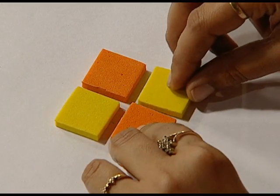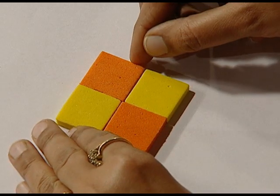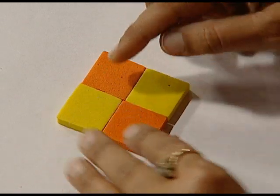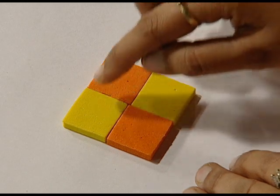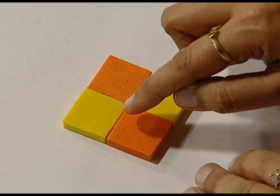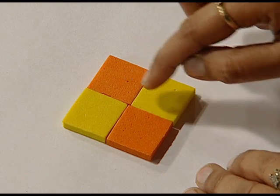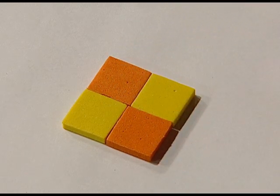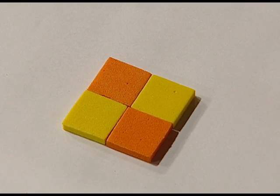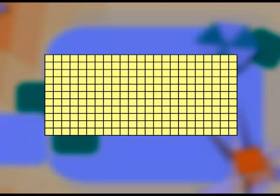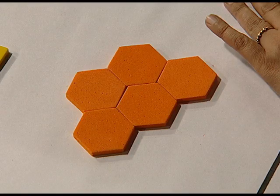Next, let us look at one more tessellation made out of the next regular polygon, which is a square. The four squares put together form a tessellation, as there are no gaps and neither are there overlaps. The pattern can continue to result in a pattern like the one shown here.